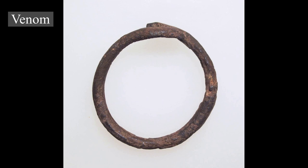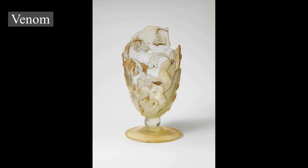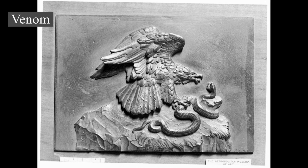Venomous snakes that use hemotoxins usually have fangs in the front of their mouths. Some snakes that use neurotoxins, such as the mangrove snake, have fangs in the back of their mouths with the fangs curled backwards. This makes it difficult both for the snake to use its venom and for scientists to milk them. The elapids, however, such as cobras and kraits are proteroglyphous — they possess hollow fangs that cannot be erected toward the front of their mouths and cannot stab like a viper. They must actually bite the victim.